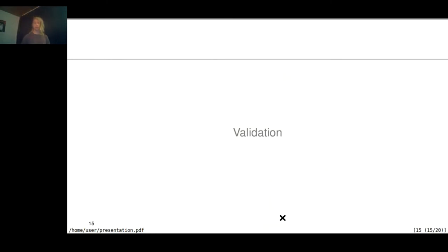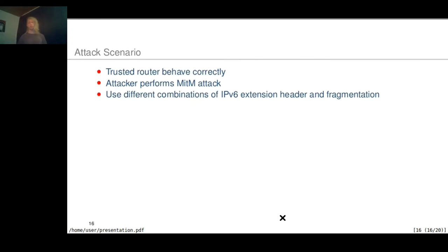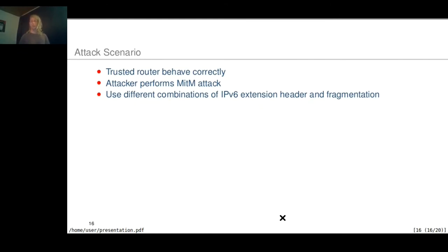I will now show how we validated our RA-GUARD implementation using an attack scenario. We assume that the trusted router behaves correctly, and an attacker tries to perform a man-in-the-middle attack. The attacker is an outsider on the same link and sub-network as the host — for example, in a public network — and tries to eavesdrop, manipulate, or interrupt the traffic. The attacker uses different combinations of IPv6 extension headers and fragmentation that are typically used to circumvent RA-GUARD implementations.